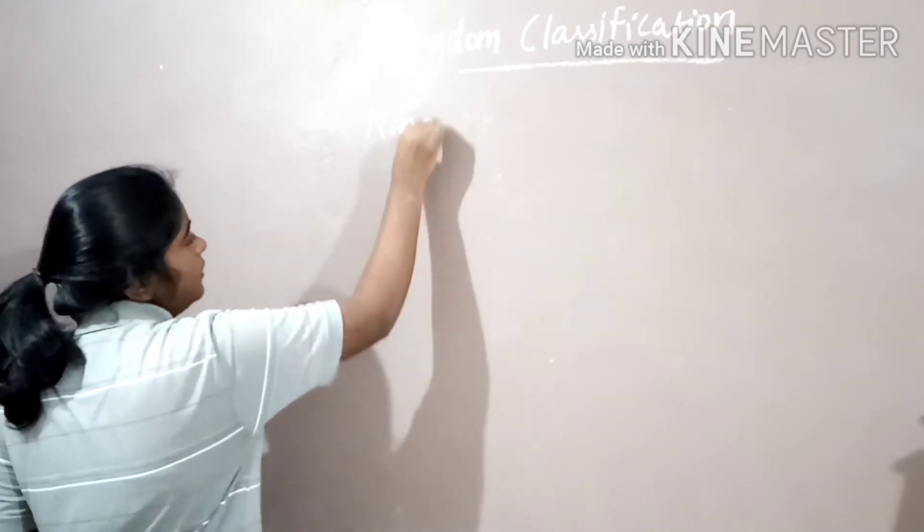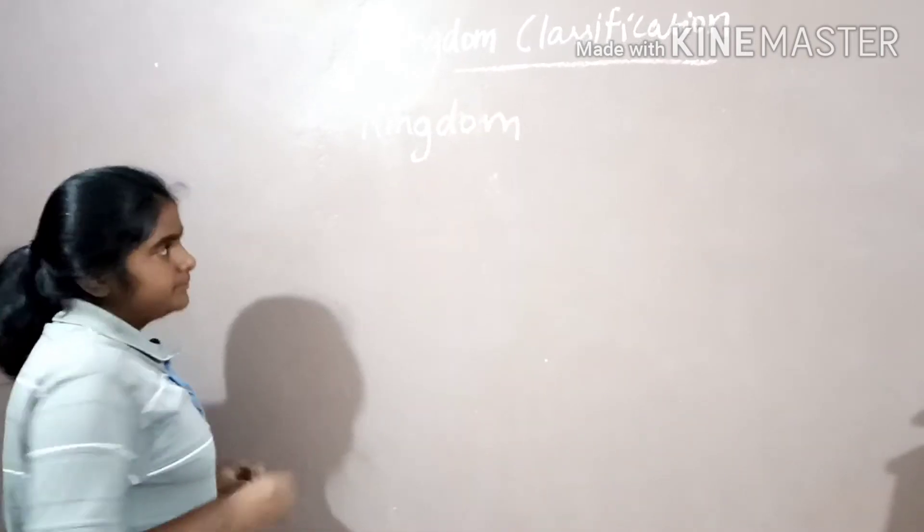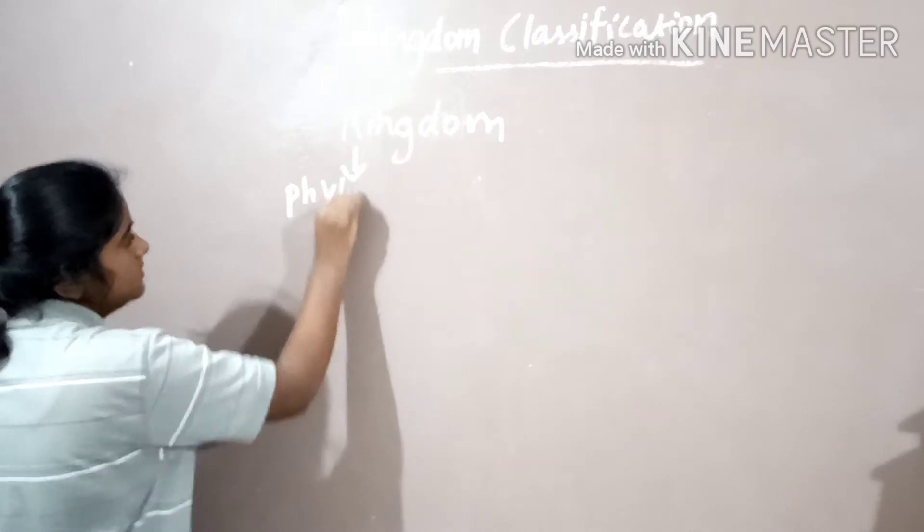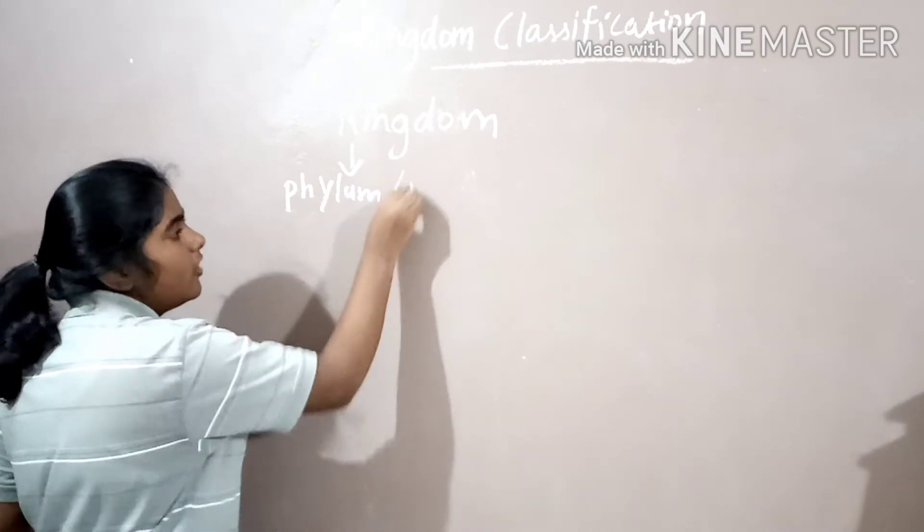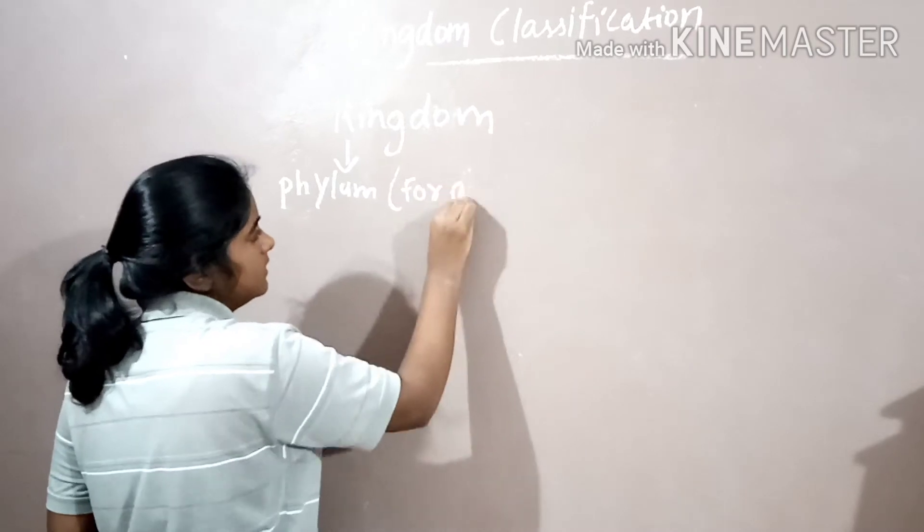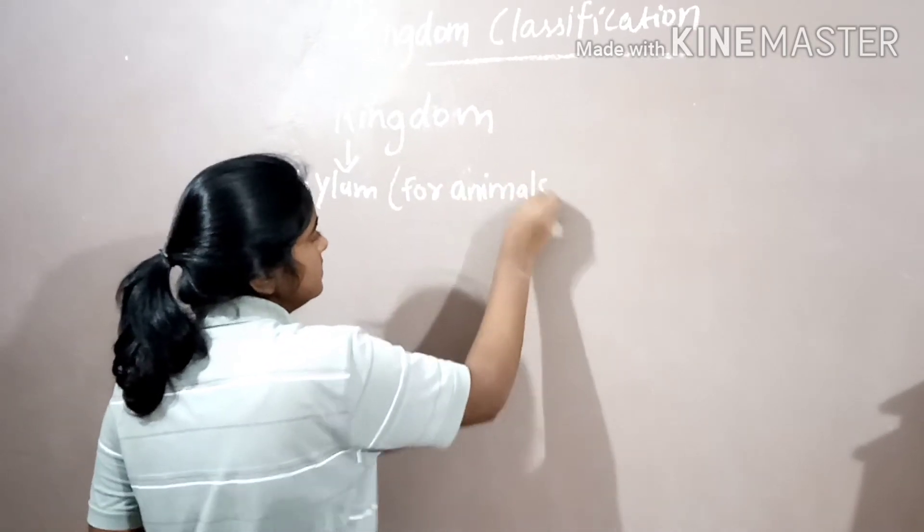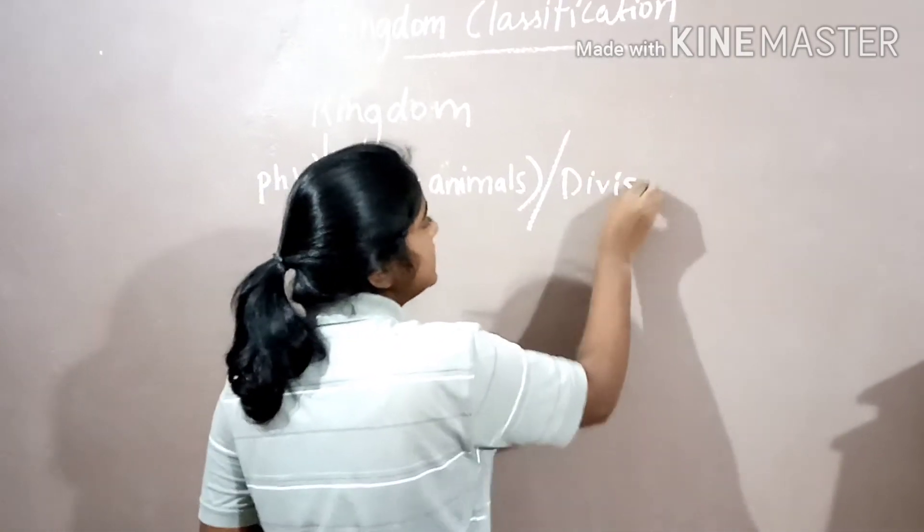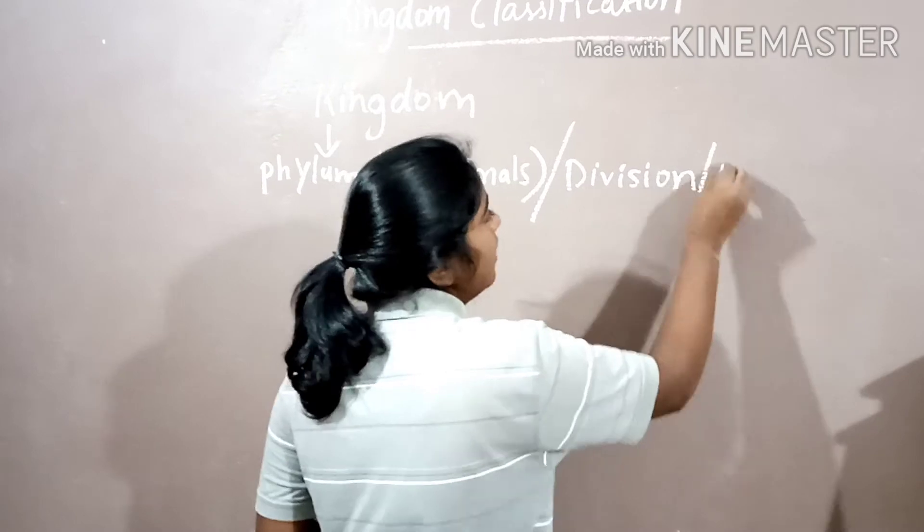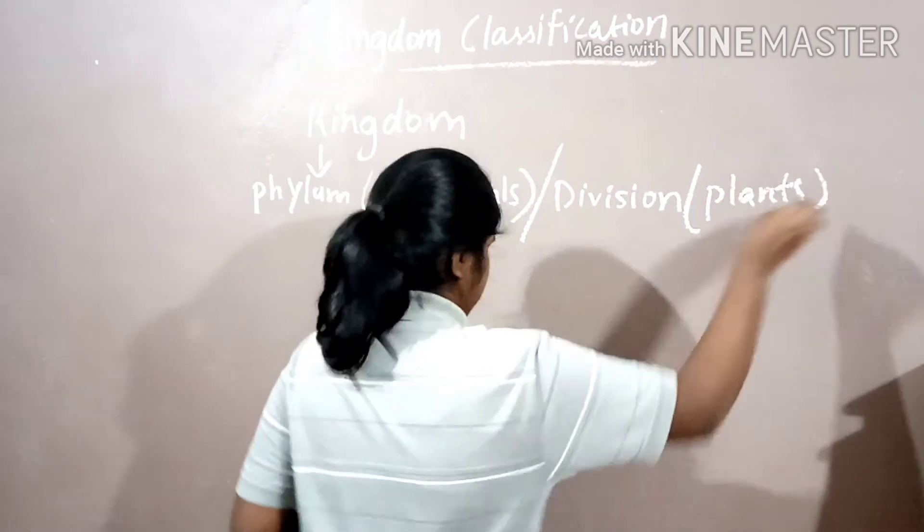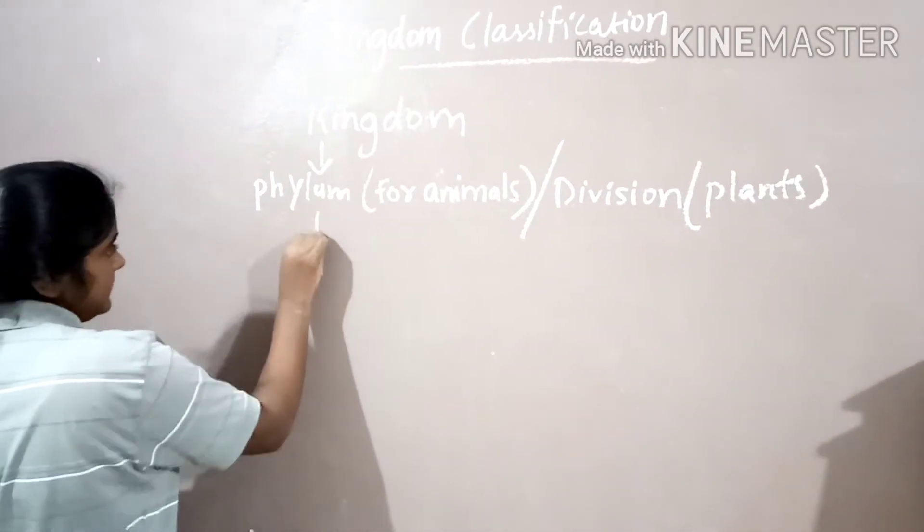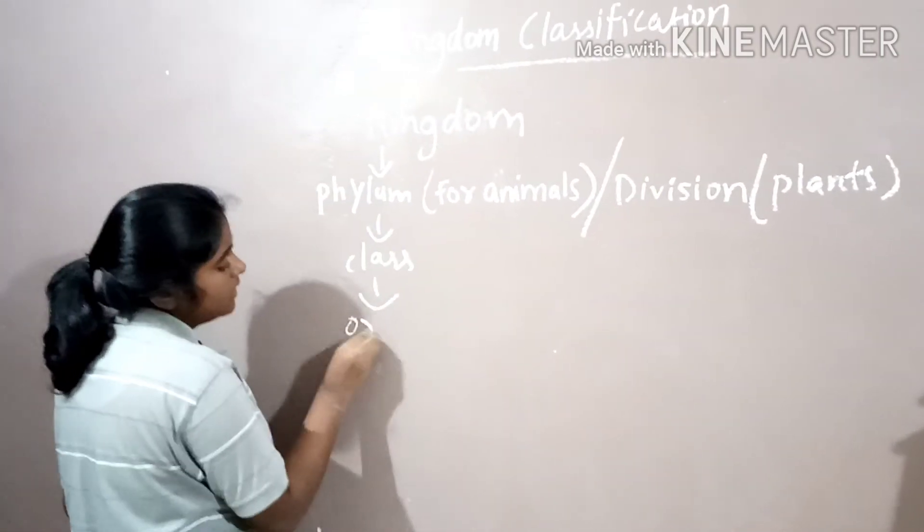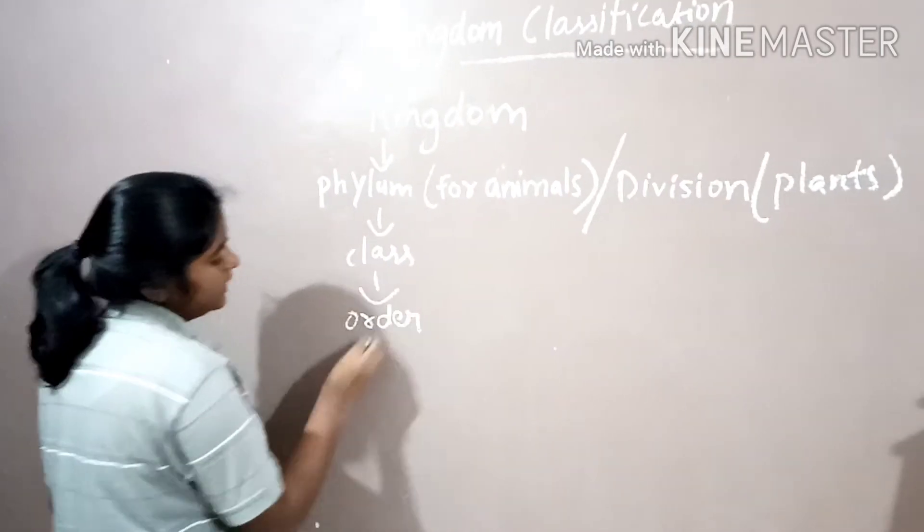Now let us learn about the ranks of classification system. The highest rank of classification is kingdom, after kingdom phylum for animals and division for plants, next class, then order, family, genus, and species.